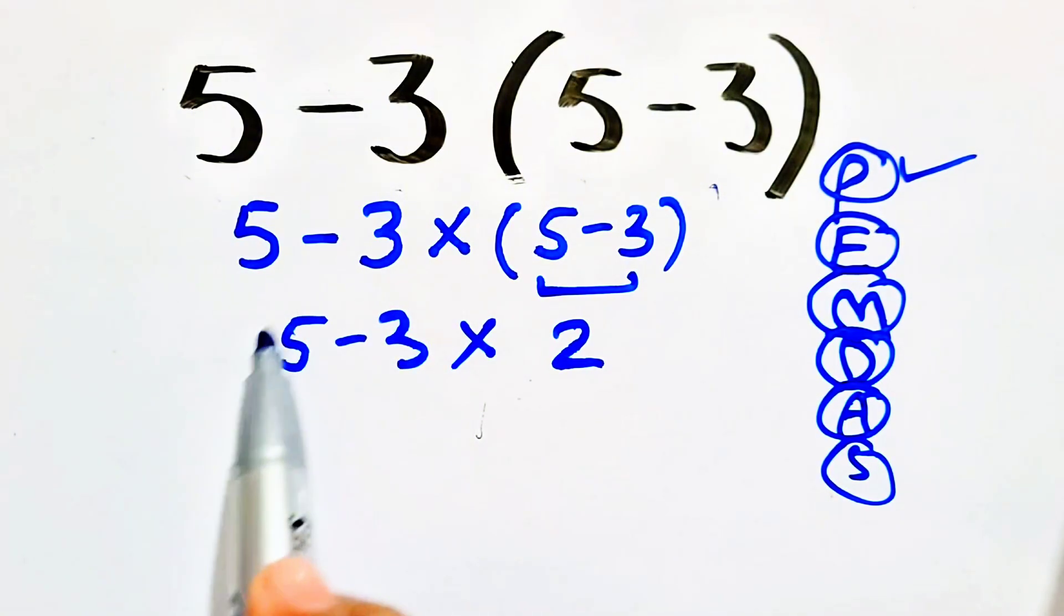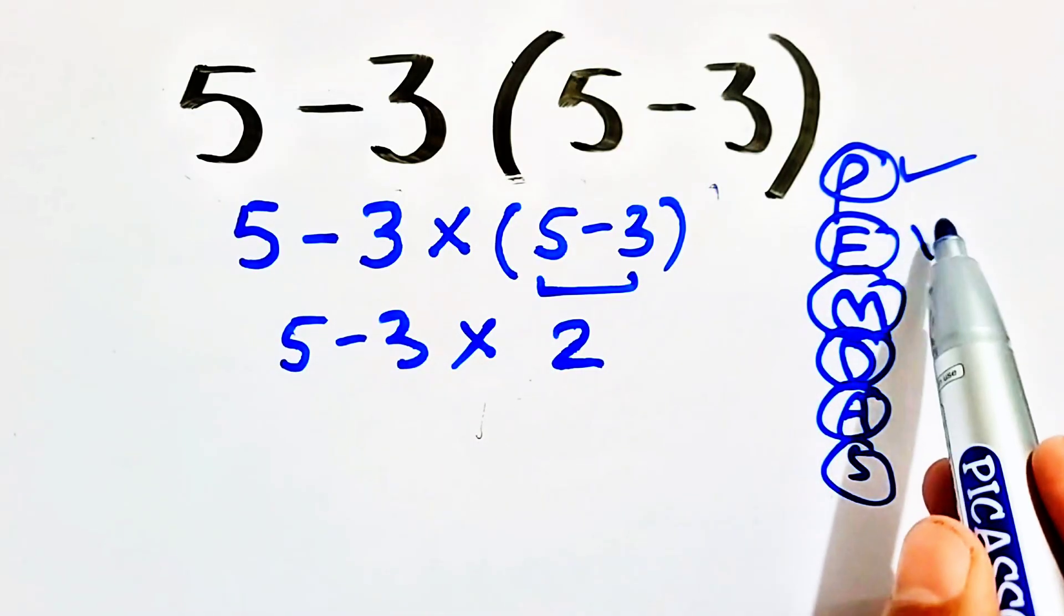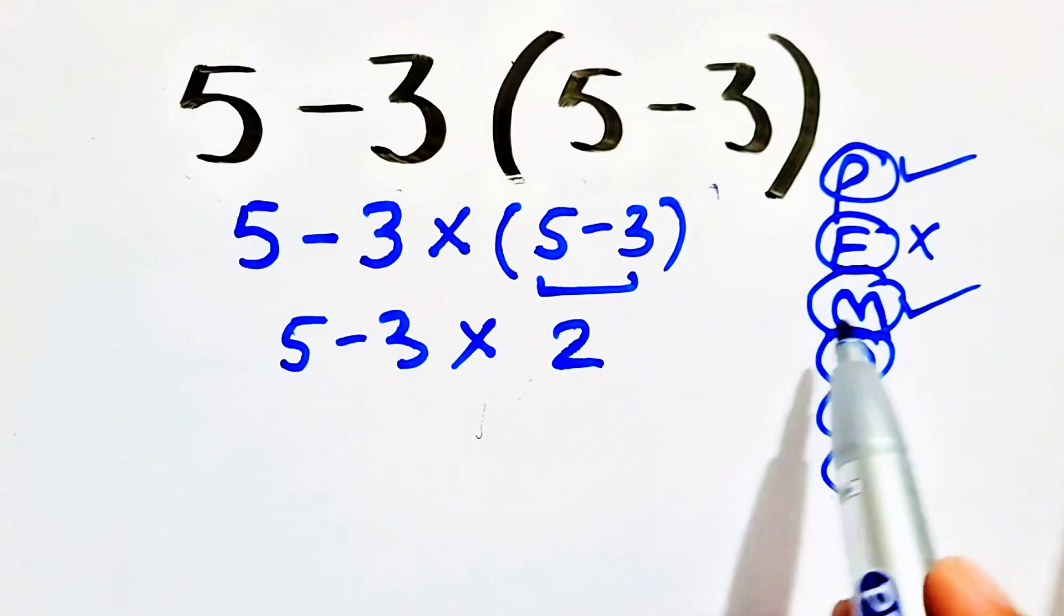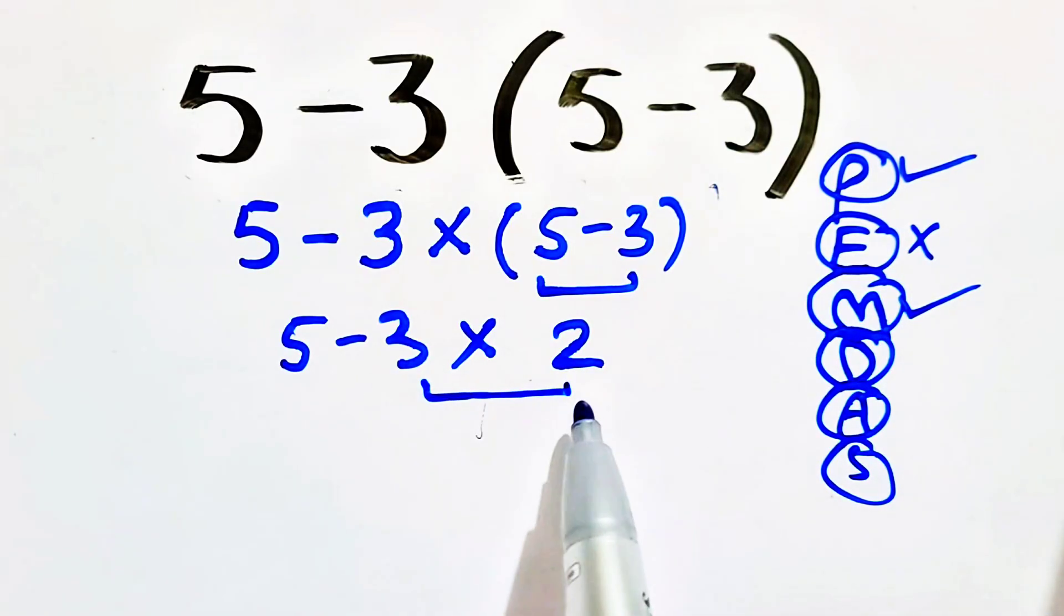Now don't solve 5 minus 3 first because exponent is missing. Then it's the turn of multiplication, so we have to handle this multiplication as second priority. 5 as it is, minus as it is, 3 times 2 will be equal to 6. Now 5 minus 6 will be equal to minus 1.